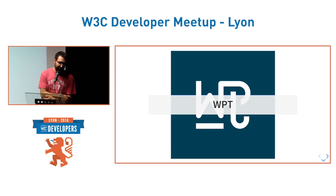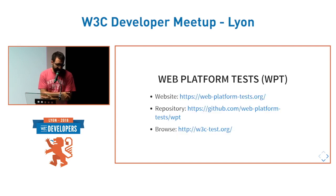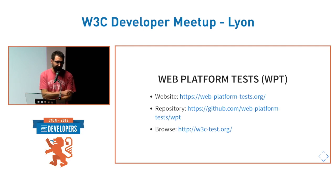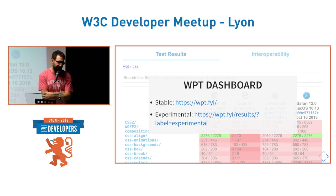Apart from the specs, specs need test suites, and all of that is in another repository: the WPT web platform tests. This repository is on GitHub, and there is a website explaining how you can write and submit new tests for the specs. You can browse the different tests and see if they are passing or failing in different browsers. This WPT repository is for the whole web platform — not only CSS, but also HTML, Shadow DOM, and whatever else — all the test suites are there.